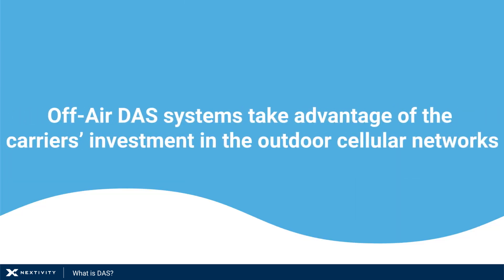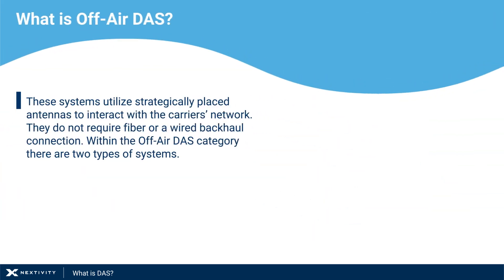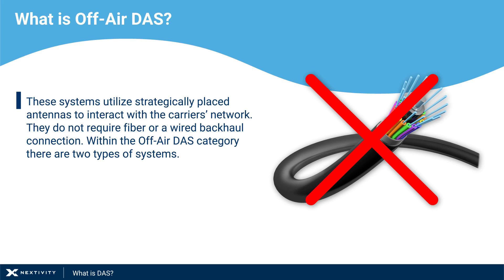Off-air DAS systems take advantage of the carrier's investment in the outdoor cellular networks. These systems utilize strategically placed antennas to interact with the carrier's network and do not require fiber or a wired backhaul connection.